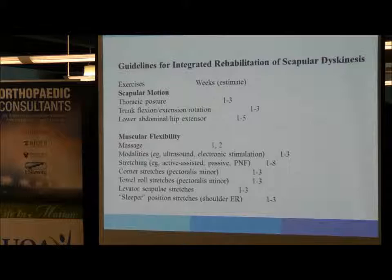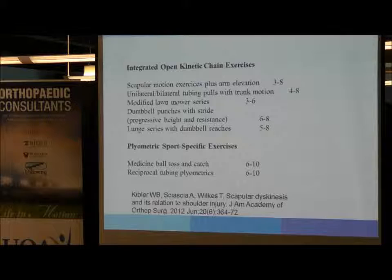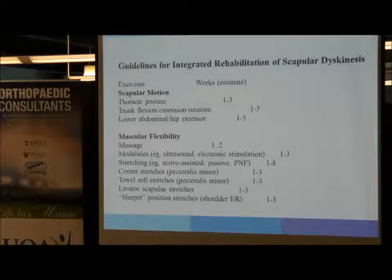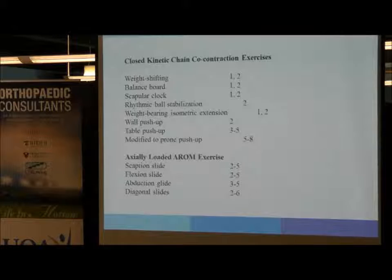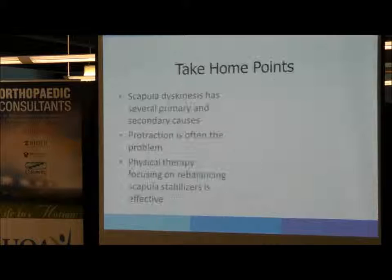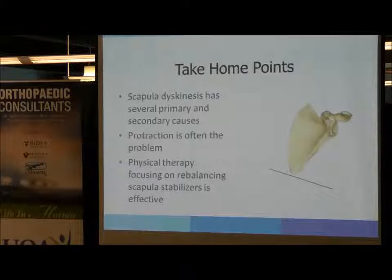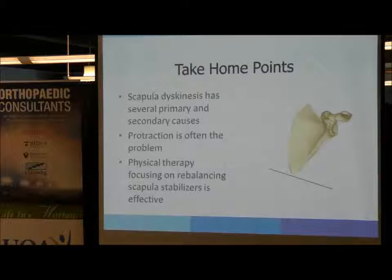There are published rehab guidelines by Kibler in the Journal of the Academy of Orthopedic Surgeons detailing specific exercises at different weeks of therapy — scapular motion, stretching, and strengthening — which is a good reference. Take-home points: scapular dyskinesis has several primary and secondary causes; protraction is often the problem, so working on retraction muscles is key. Physical therapy is the primary treatment, and it's important not to overlook the scapula given its many associations with shoulder disorders.